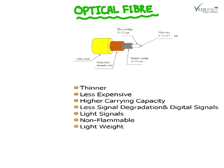In electronic communication, radio waves and microwaves are used as carriers of information through copper wire and coaxial wire. Previously, when we had to transmit information from one place to another, we used copper wire to transfer it.